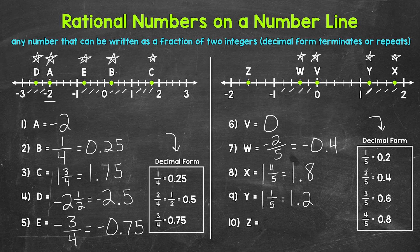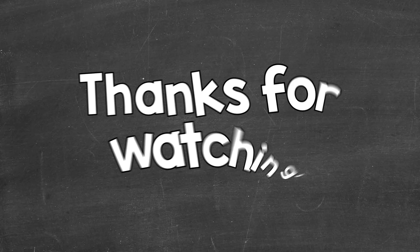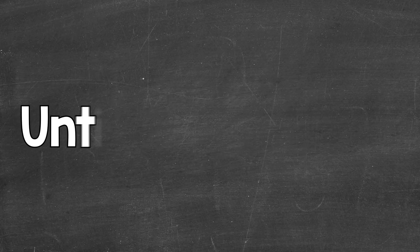And then lastly, point Z is between negative one and negative two. We have negative one and one fifth, negative one and two fifths, negative one and three fifths, and negative one and four fifths. So point Z is at negative one and three fifths, which equals negative 1.6 in decimal form. So there you have it — that's how to identify rational numbers on a number line. I hope that helped. Thanks so much for watching. Until next time, peace.